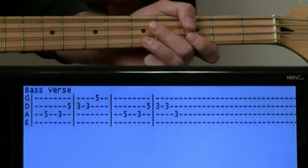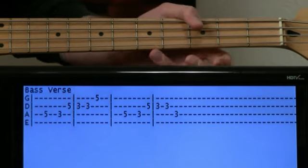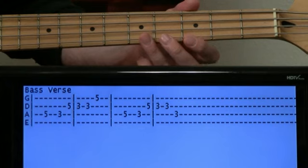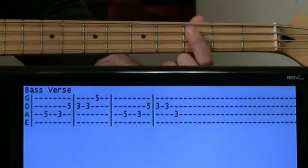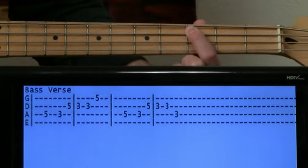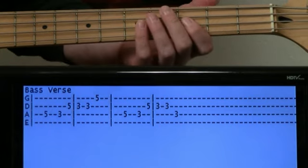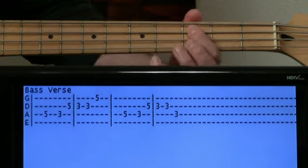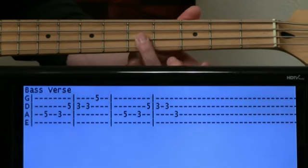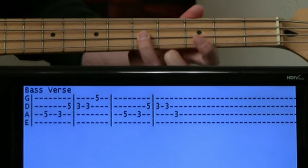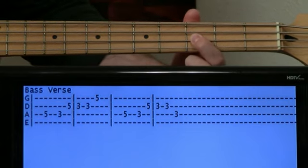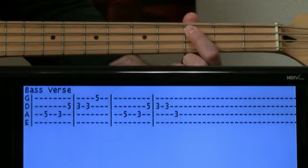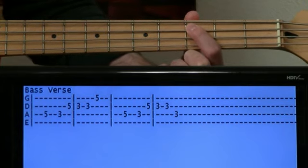For the second half of this, it's basically the same thing but instead of coming up to that five on the G, we're going to hit that low octave of it on the three of the A. So start it the same way, and we do the fives on the D, a couple threes on the D, and then we're just going to end it on the low octave, so three on the A.